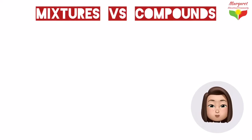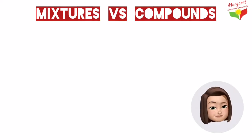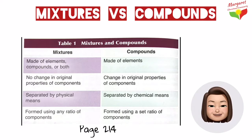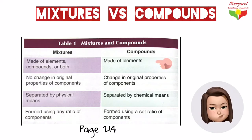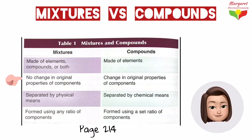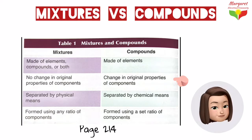You might confuse mixtures with compounds, so the differences between mixtures and compounds are shown in Table 1 from your book on page 214. Mixtures are made of elements, compounds, or both, whereas compounds are only made of elements. In a mixture, there is no change in the properties of the components, whereas in compounds the properties of the components do change.